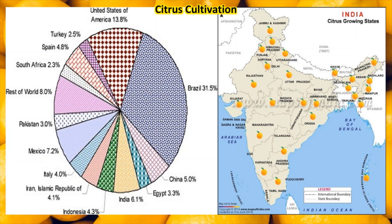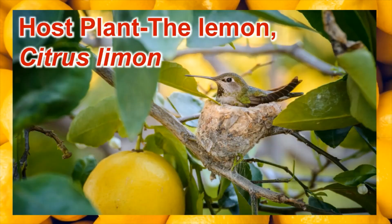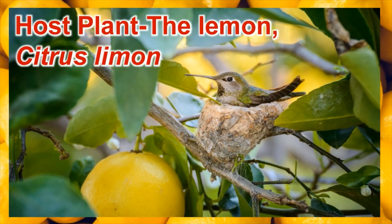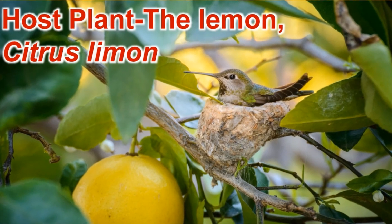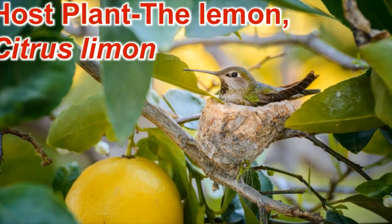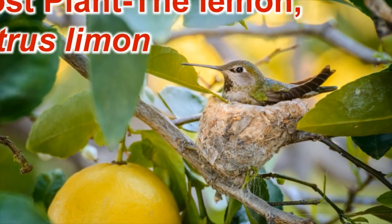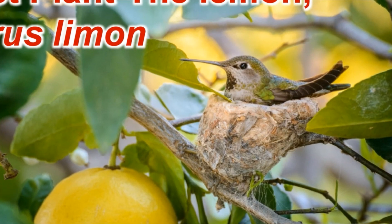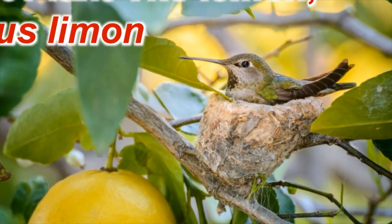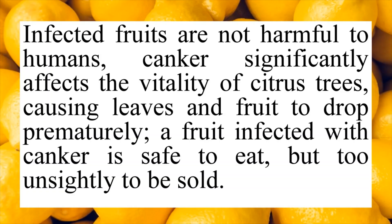This is the pie chart where you can see the different nations which have citrus cultivation. Brazil is the country which grows the highest amount of citrus plants, and India also accounts for about six percent of global citrus cultivation. Here you can see the map of India showing different states which are growing citrus plants, as citrus cultivation is seen in almost all states. Citrus is a very important commercial crop.